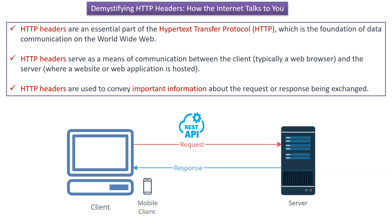In this video tutorial I will explain HTTP headers. HTTP headers are an essential part of the hypertext transfer protocol, which is the foundation of data communication on the World Wide Web. HTTP headers serve as a means of communication between the client and the server — the client is typically a web browser, and the server is where a website or web application is hosted. HTTP headers are used to convey important information about the request or response being exchanged.